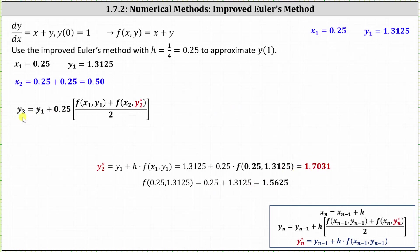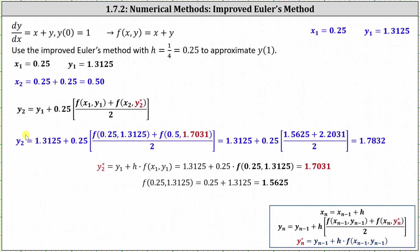Now we can determine y sub two using the improved Euler's method formula. You may want to pause the video and check all these values: y sub one is 1.3125, h is 0.25, x sub one is 0.25, y sub one is 1.3125, x sub two is 0.5, and y sub two star is 1.7031. Determining the function values and simplifying, we have y sub two equals 1.7832.